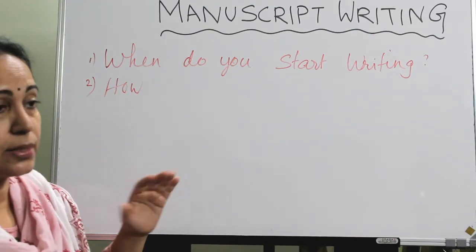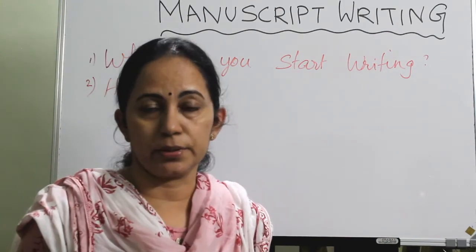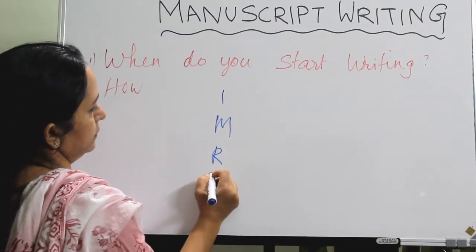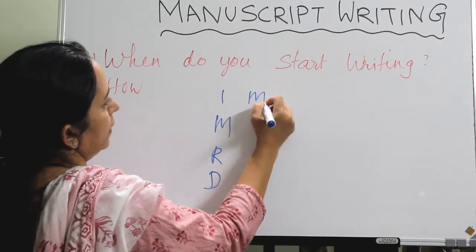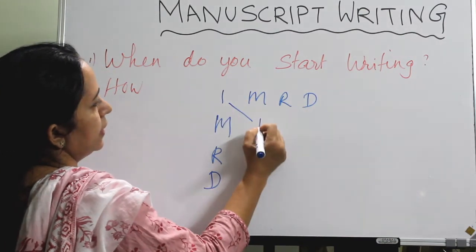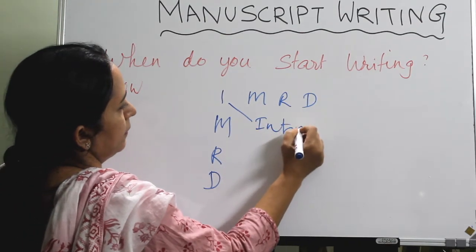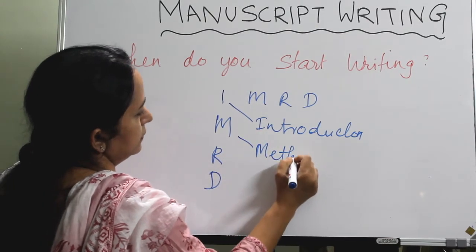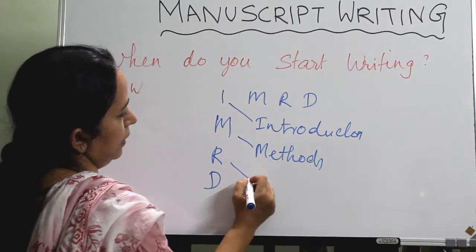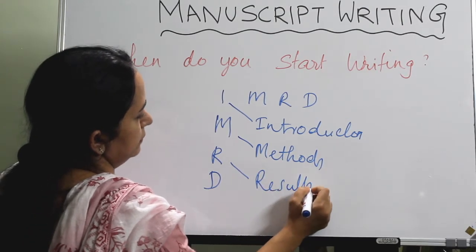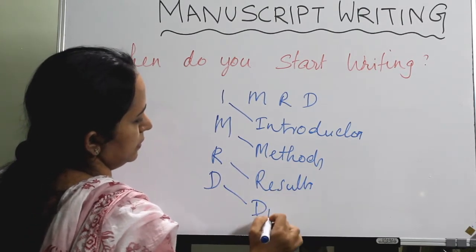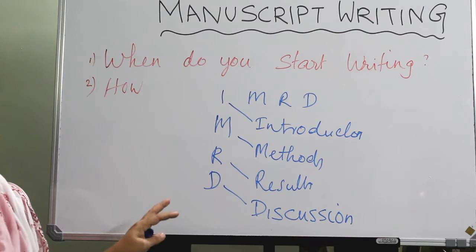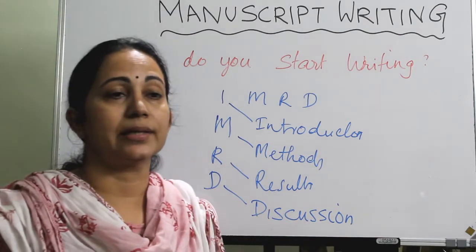The next question is: how can I write a manuscript? Usually we follow the IMRD structure — Introduction, Methods, Results, and Discussion. This IMRD structure is usually the pattern followed in writing any manuscript.